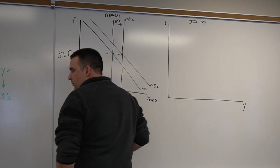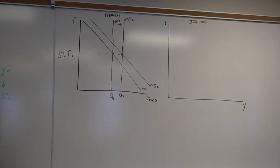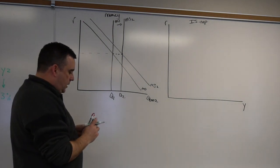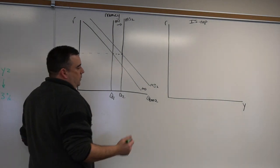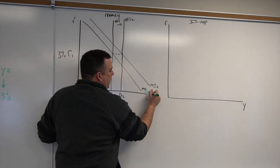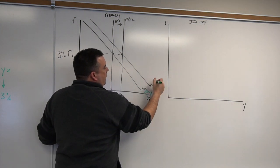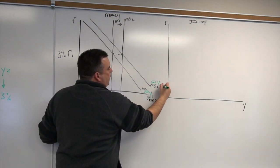We said that money demand one was occurring at Y1 and money demand two was occurring at Y2.